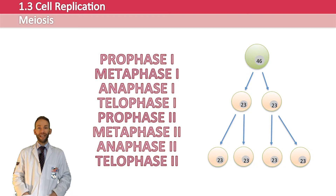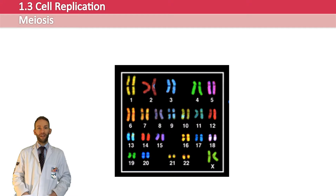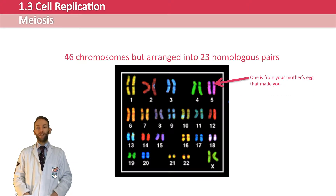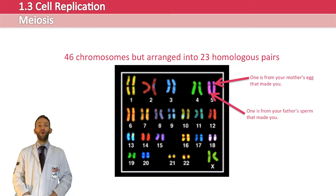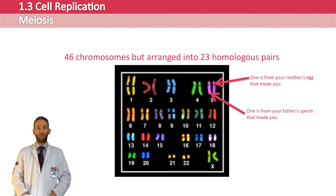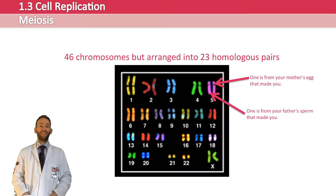Before going through the stages, it's important to realize something about the 46 chromosomes in a normal human cell. You actually have two versions of each type of chromosome, so they can be arranged into 23 pairs. One of each pair will come from your mother and the other will come from your father. This is what we call homologous pairs — matched chromosomes, one from your mother and one from your father. This is why a diploid cell is called 2N, because it has two versions of each chromosome.